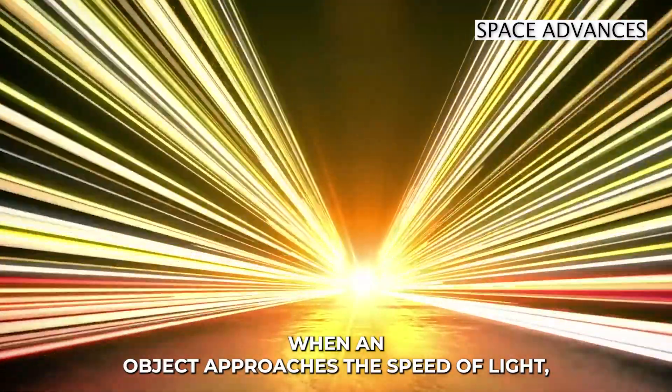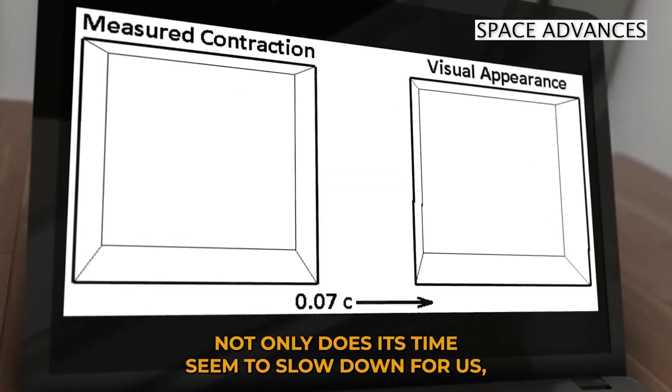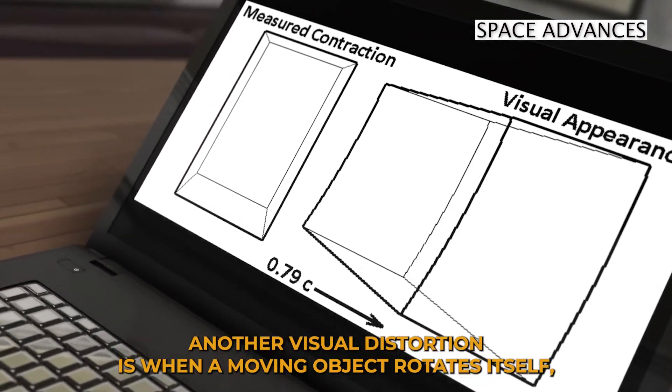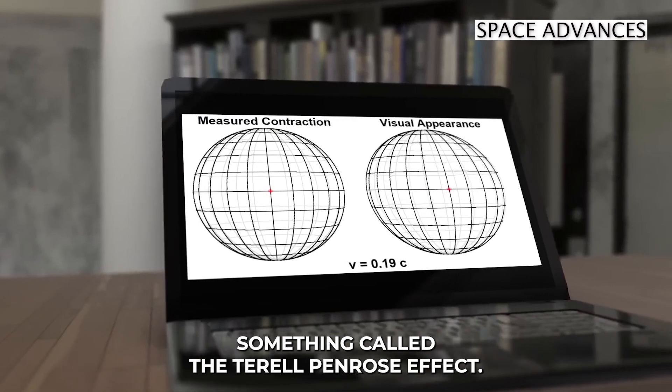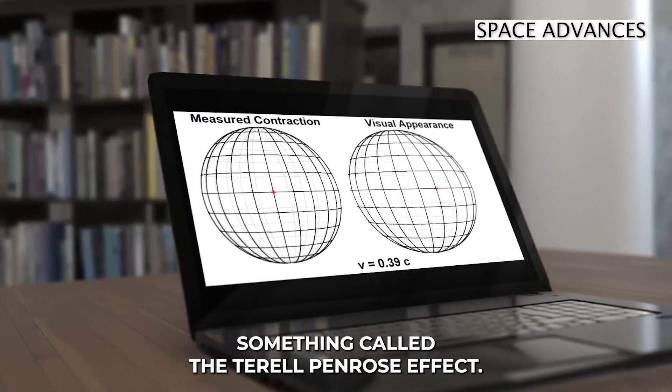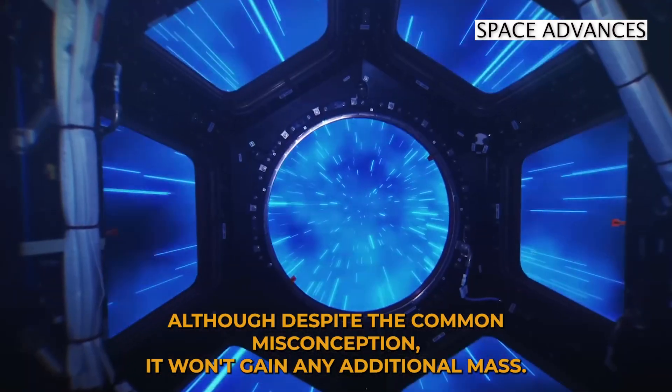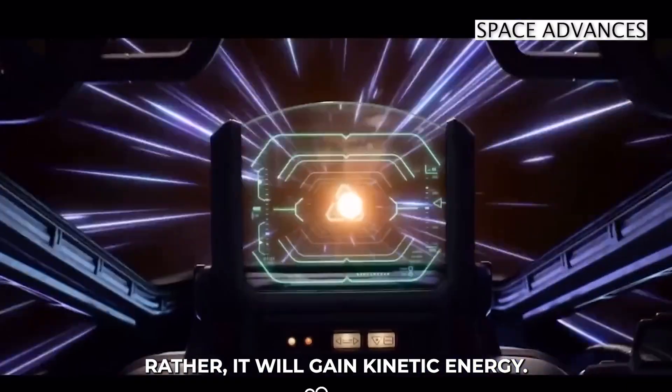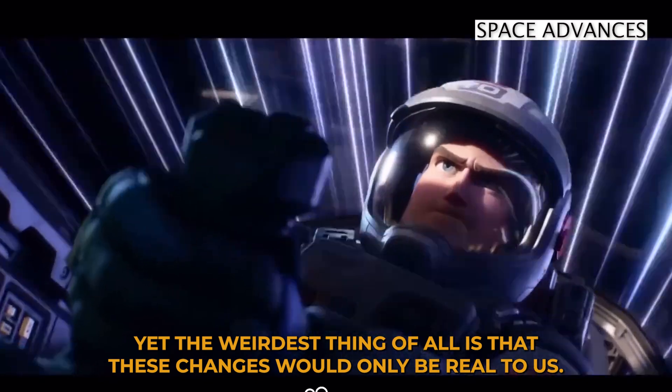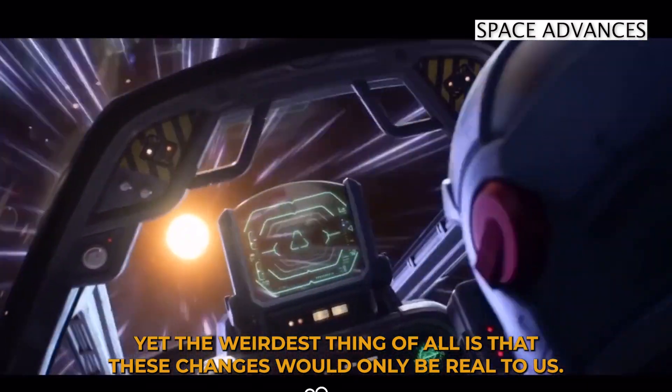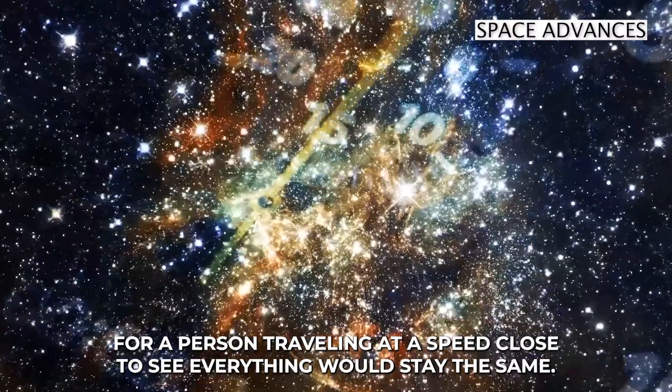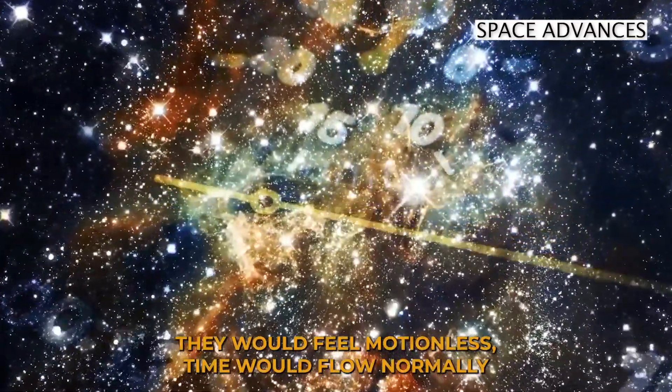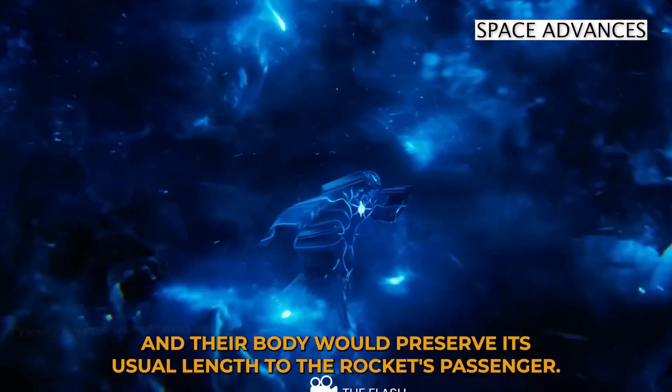When an object approaches the speed of light, not only does its time seem to slow down for us, but we also witness the object shrinking in length. Another visual distortion is when a moving object rotates itself, something called the Terrell-Penrose effect. Although, despite the common misconception, it won't gain any additional mass, rather it will gain kinetic energy. Yet, the weirdest thing of all is that these changes would only be real to us. For a person traveling at a speed close to c, everything would stay the same. They would feel motionless, time would flow normally, and their body would preserve its usual length.